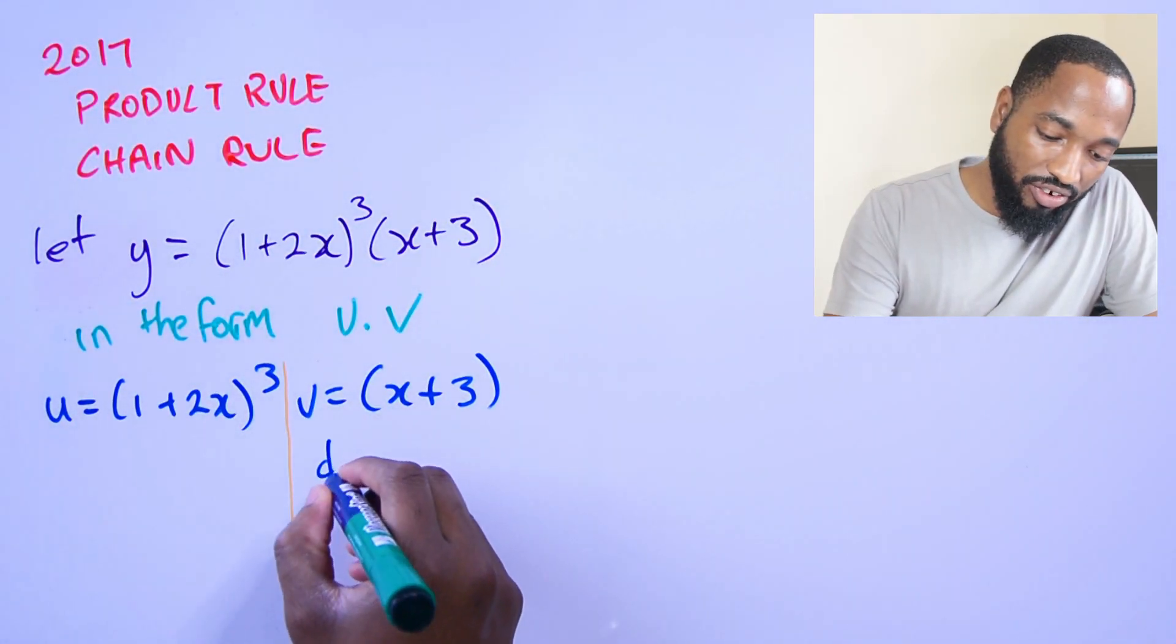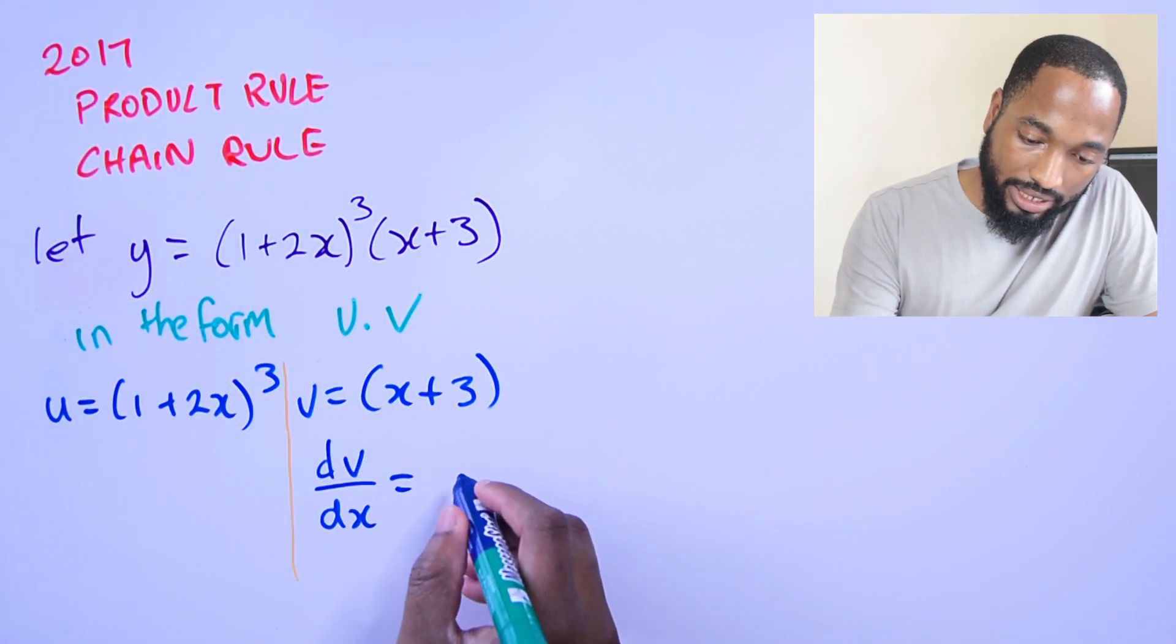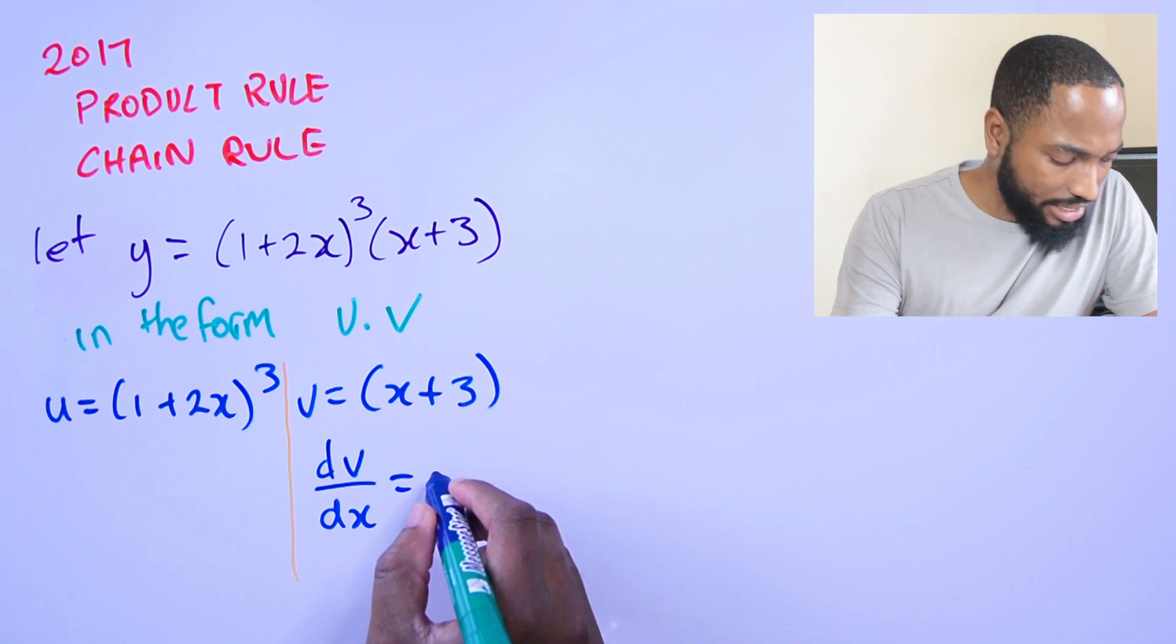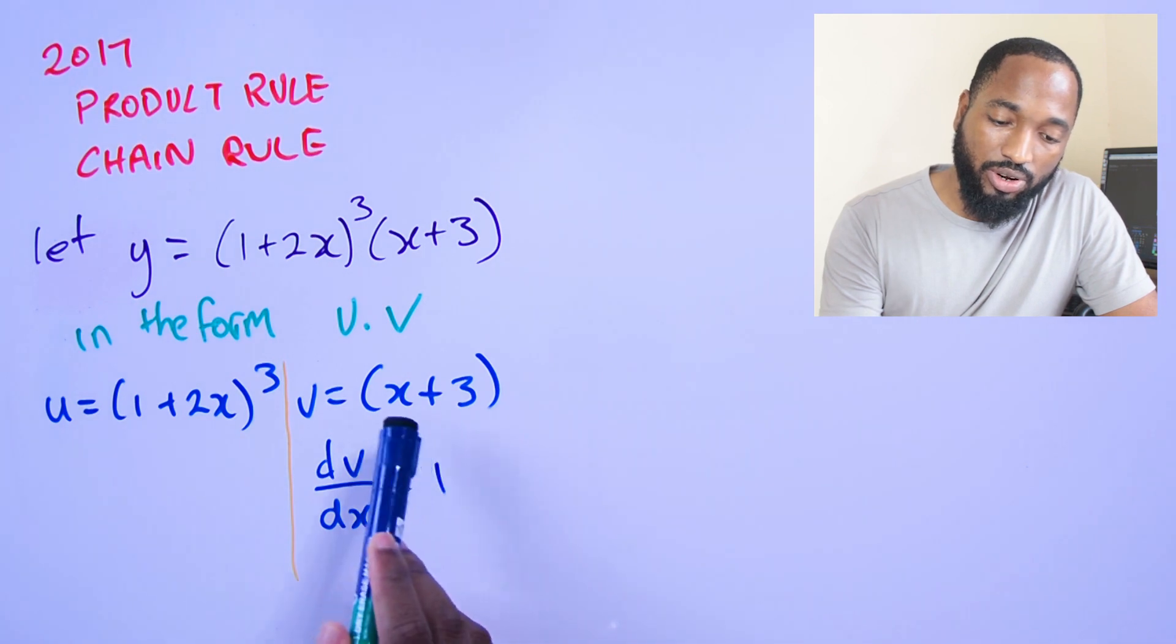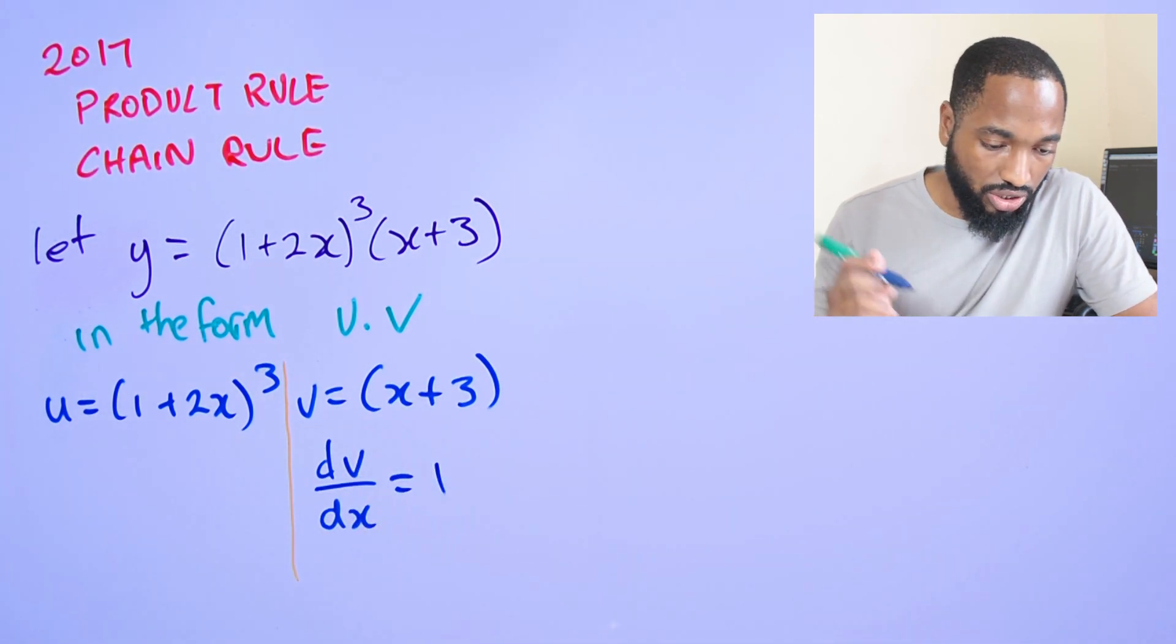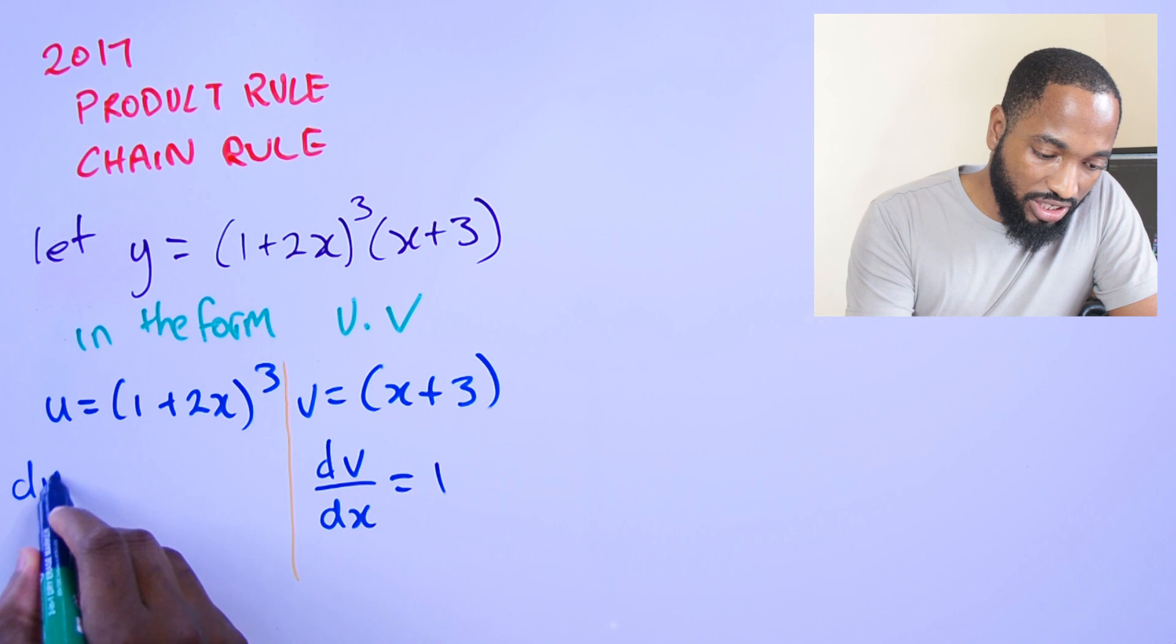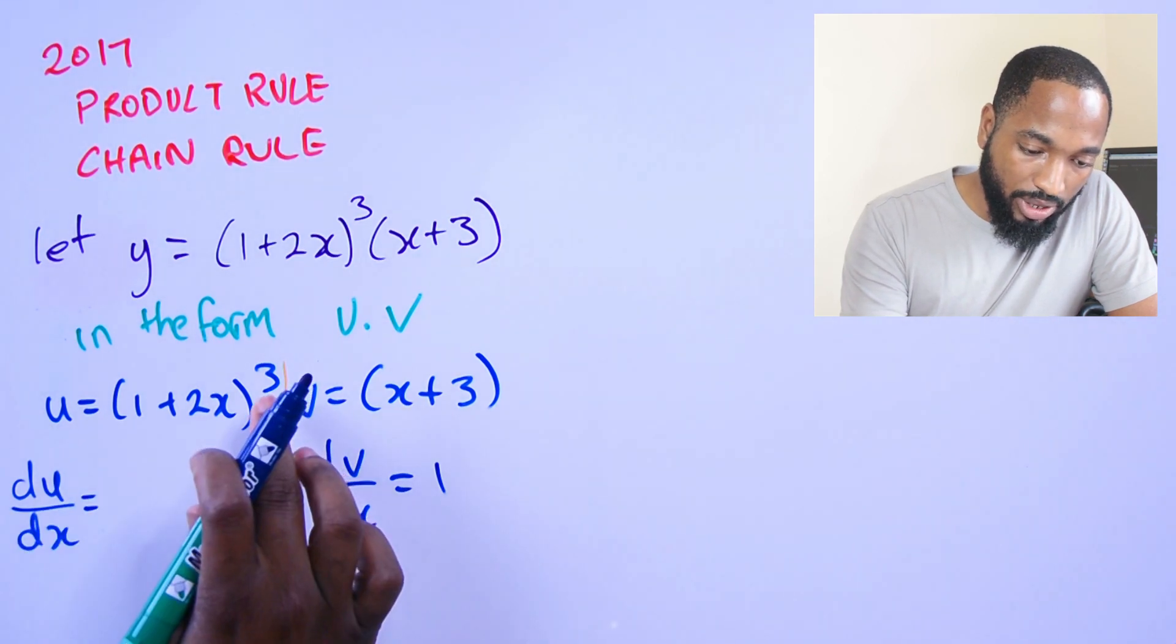So immediately we can differentiate v with respect to x and we'll just end up with a nice 1, because the differential of a constant is 0, differential of x is 1.